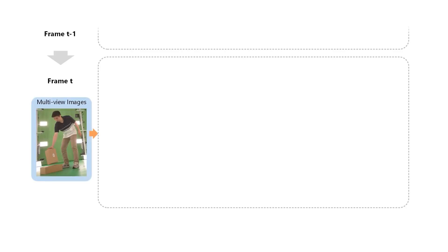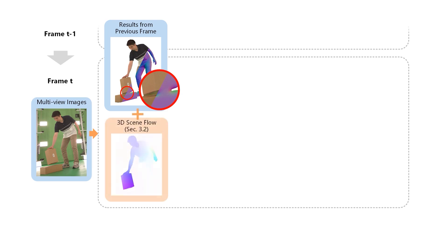For each frame, we take multi-view RGBD images and the Gaussian surfaces from the previous frame as input. We warp the Gaussian surfaces using 3D scene flow. This provides robust initialization for large motions.